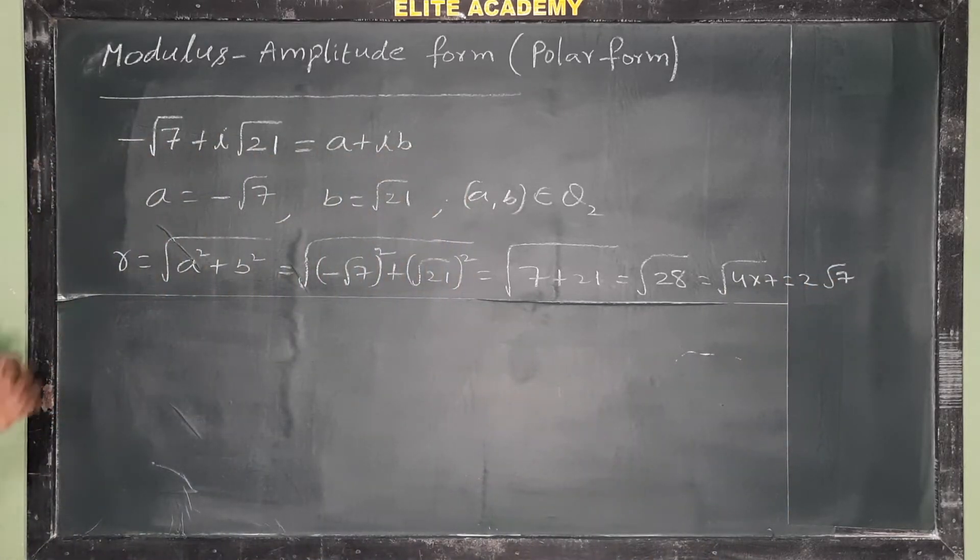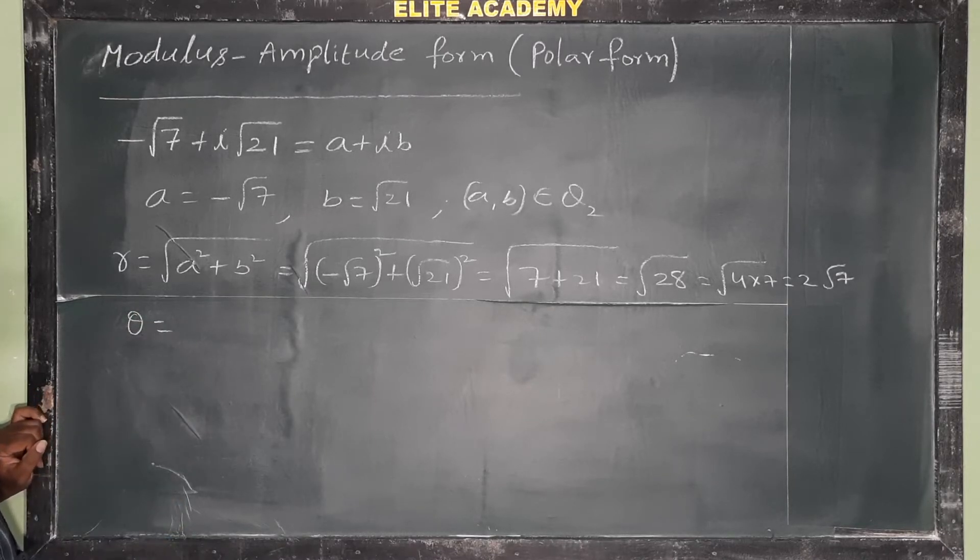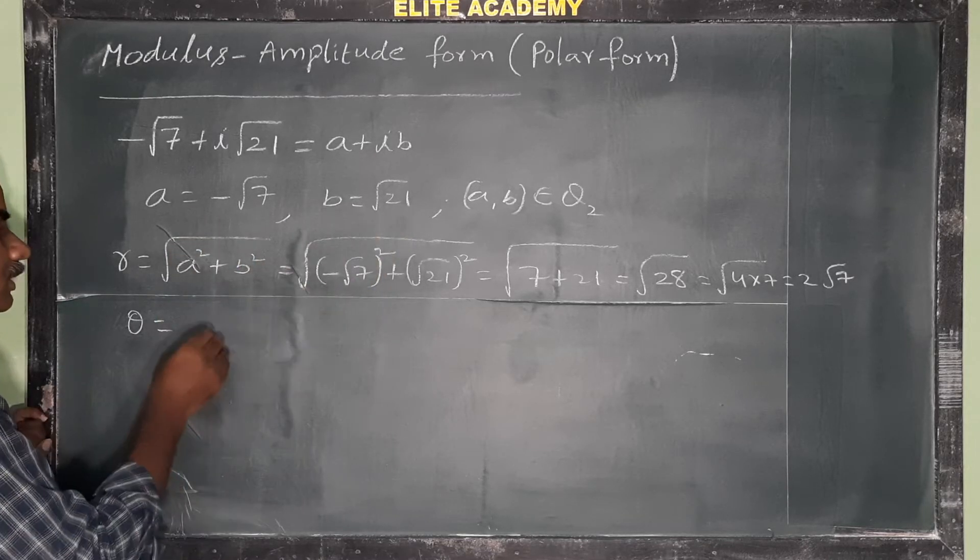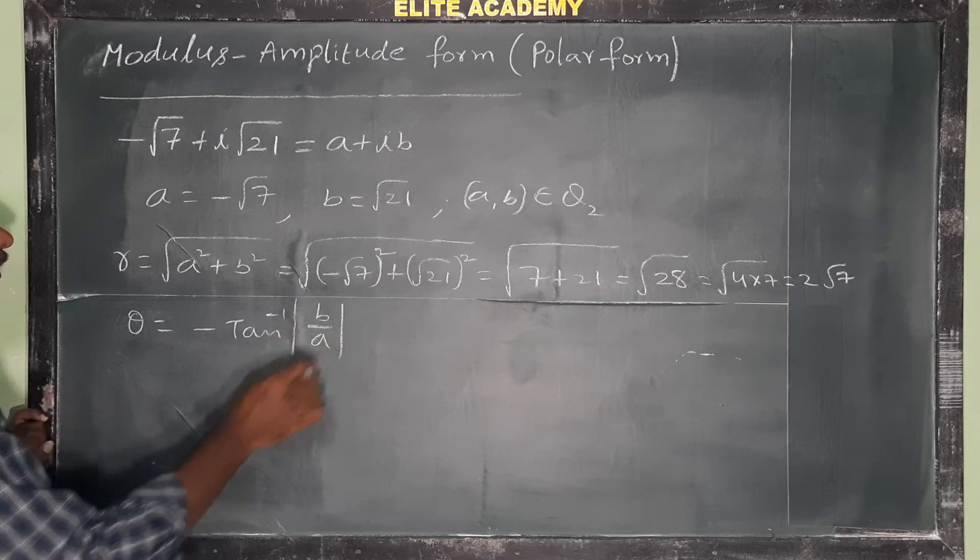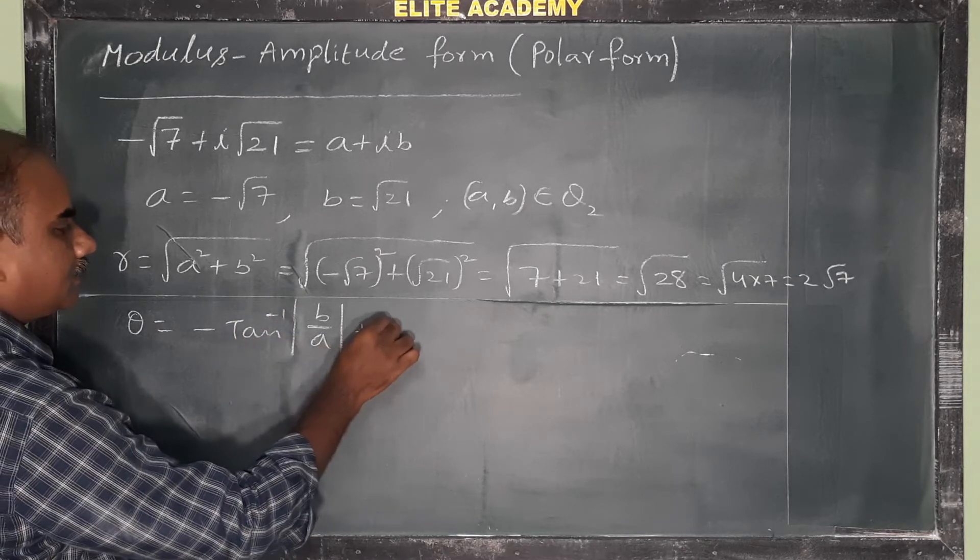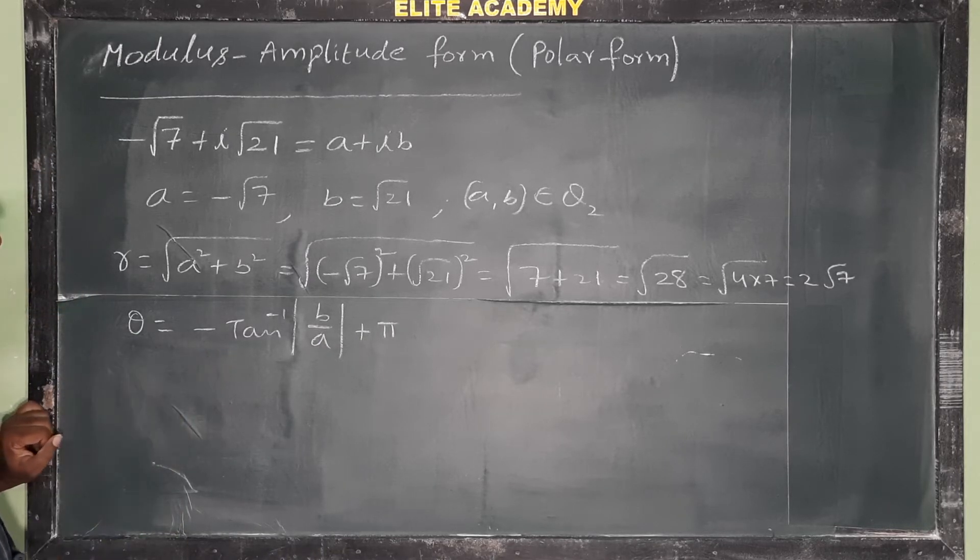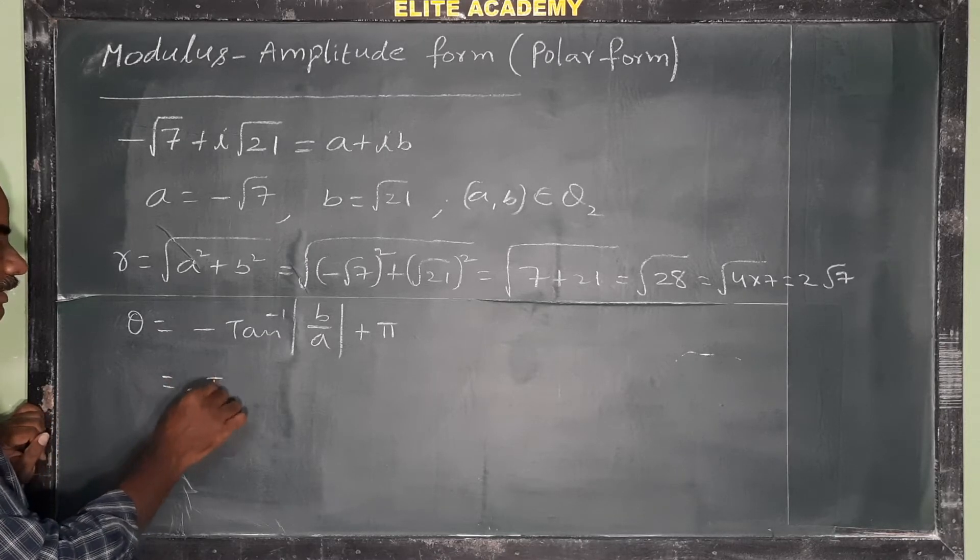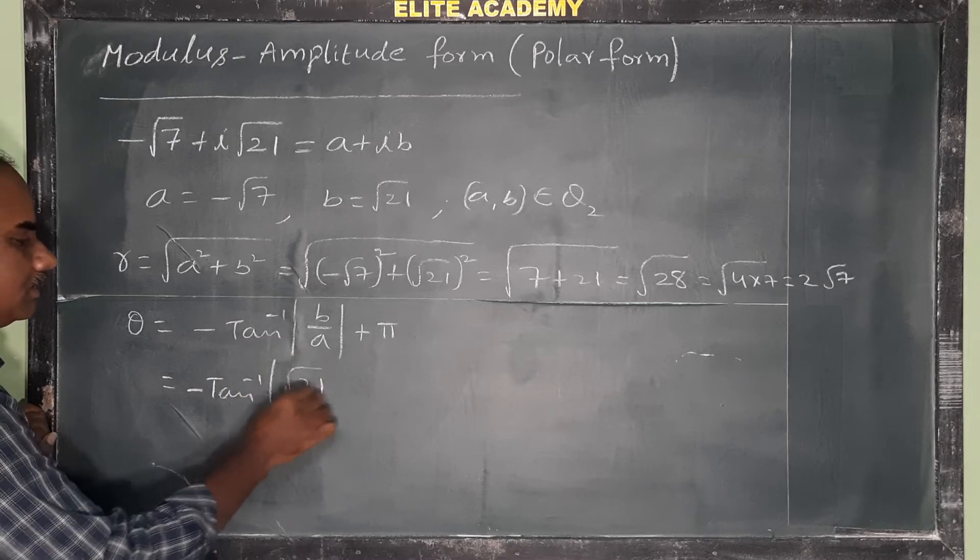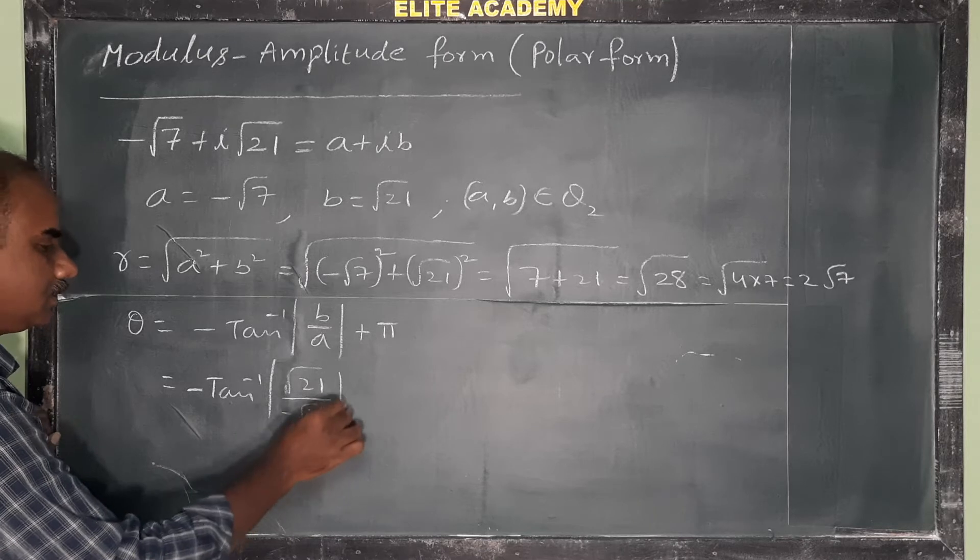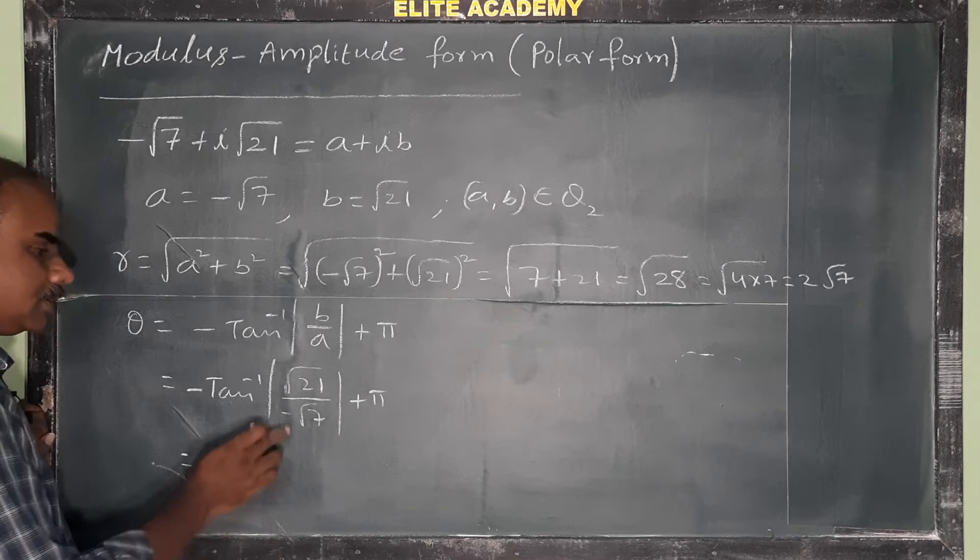Okay, so this is the value of r: 2 root 7. Next, amplitude, that is theta, the argument. So here the point is in second quadrant. We take amplitude as minus tan inverse modulus of b by a plus pi. Okay, if the complex number is in second quadrant, then we take this as amplitude. So minus tan inverse b means root of 21 by a means minus root of 7 plus pi.